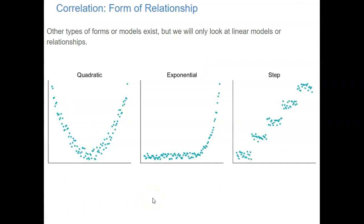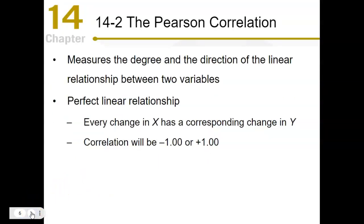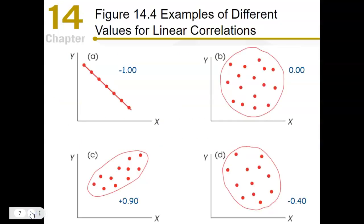There are other patterns in real-world data, but we're just going to look at linear patterns using the Pearson correlation. The Pearson correlation looks at a linear relationship between two variables — it's a number that goes from negative one to positive one, with negative one being a perfect negative correlation and positive one being a perfect positive correlation.